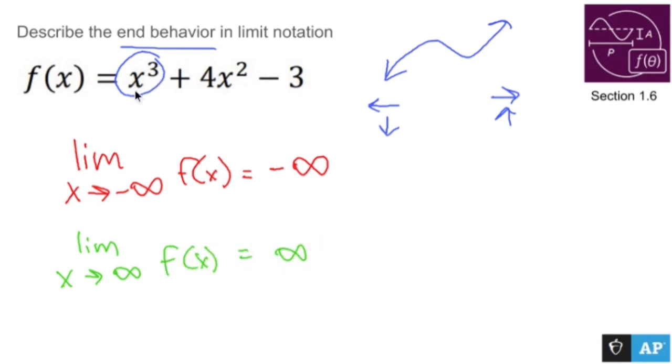Since I had an odd degree, it ends and starts out in different directions. And since in this case it's a positive leading coefficient, I start from the bottom and then I end up top.